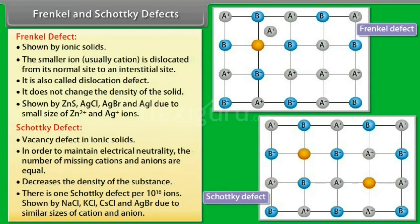It is shown by NaCl, KCl, CsCl, and AgBr, due to similar sizes of the cation and anion.